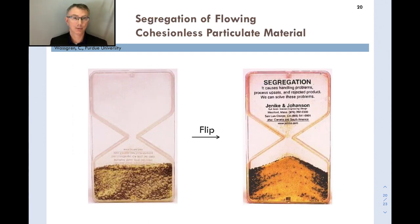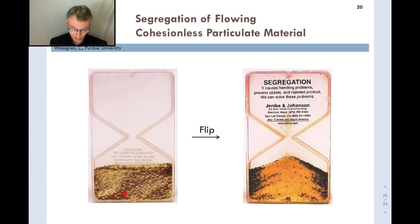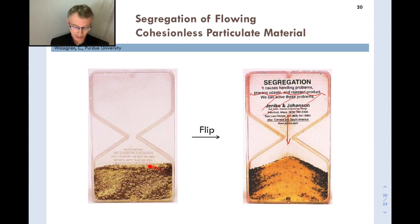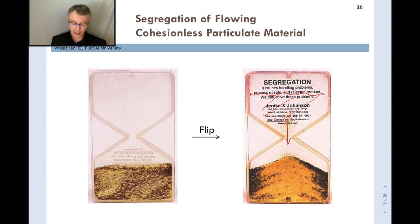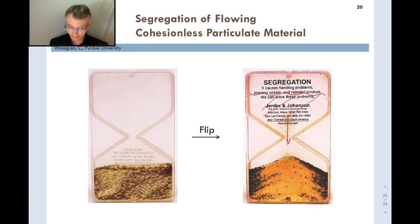Segregation is illustrated by a demonstration device from Jenike and Johansson. Two particulate materials are mixed together — a fine yellow material (smaller particles) and a coarser grayish-black material (larger particles). Starting well-mixed and then flipping the device upside down to discharge, the material segregates: fine particles collect in the middle while coarse particles collect on the edges. This shows how a nicely mixed powder can become unmixed during discharge from a hopper, resulting in poor content uniformity.